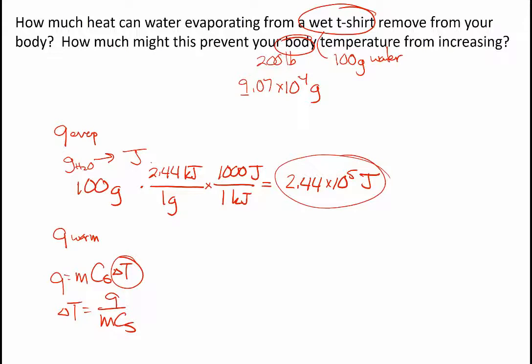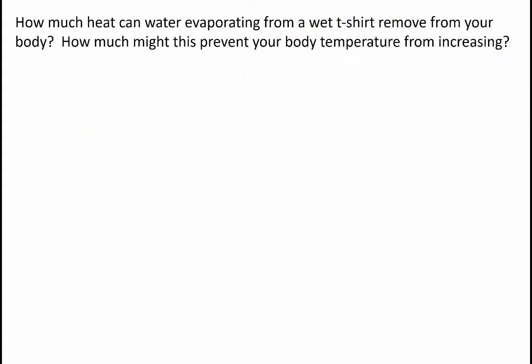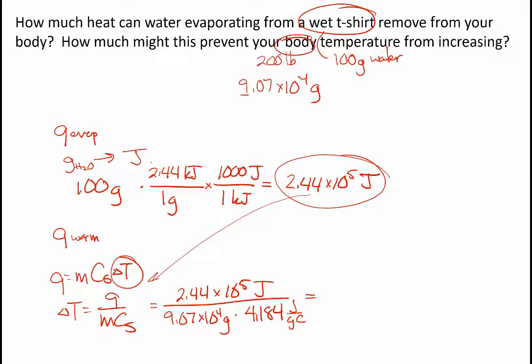And this heat, we want to compare. That's how much heat is required to evaporate the water. We want to stick that in. So 2.44 times 10 to the 5 joules. And the mass, this time, is that 9.07 times 10 to the 4 grams of body weight. And it's probably not a great assumption, but it's probably within 10%. Just say we're a bag of water. And when you punch all these numbers in, I came out with 0.6429 degrees Celsius, probably 1 sig fig, or about 1 degree Fahrenheit.